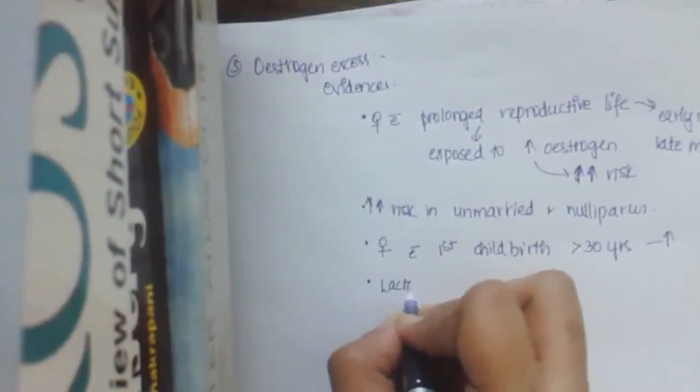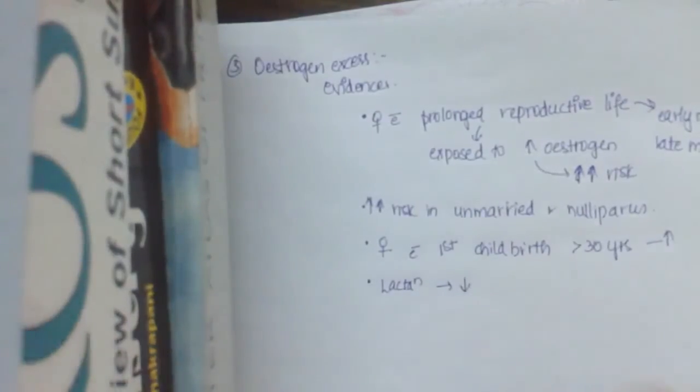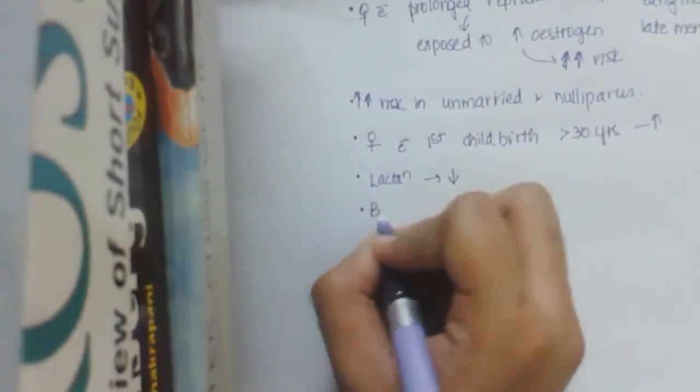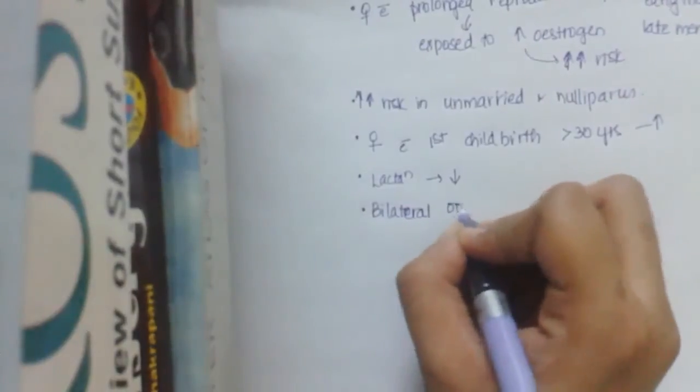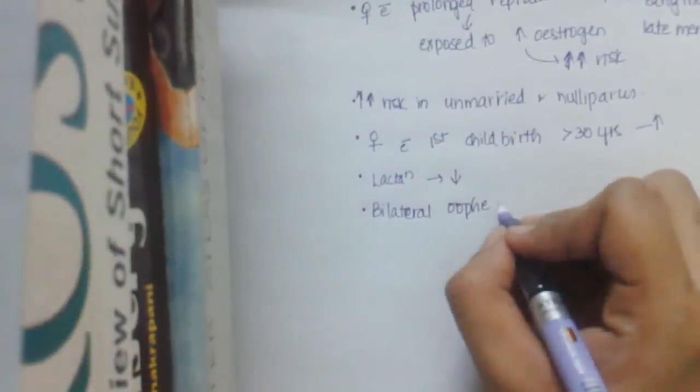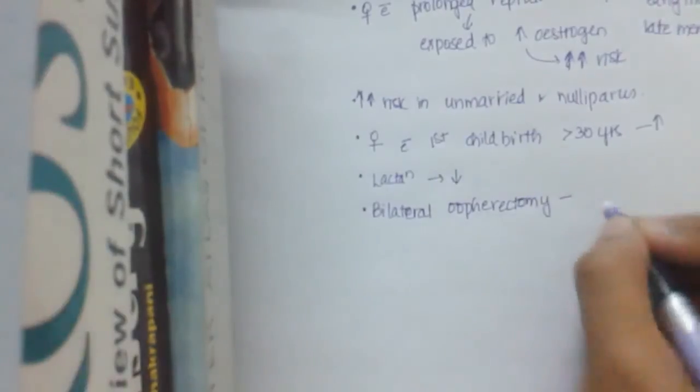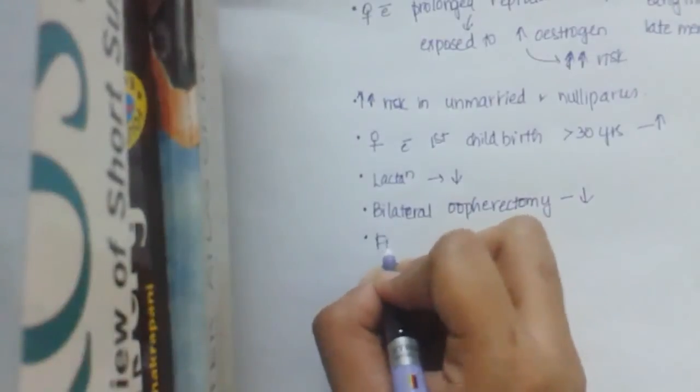And women with first childbirth greater than 30 years is at higher risk. And lactation reduces the risk of breast carcinoma. And bilateral oophorectomy, oophorectomy is removal of ovaries. So this bilateral oophorectomy, there is no estrogen. So there is decreased risk.